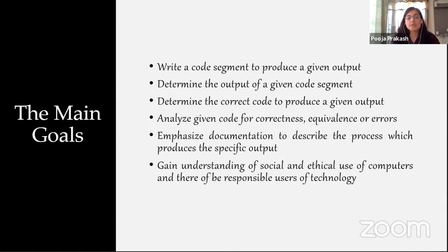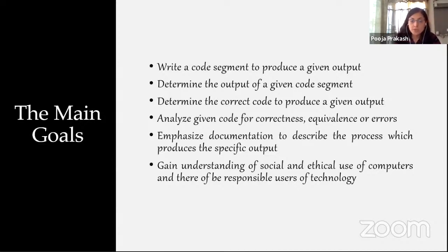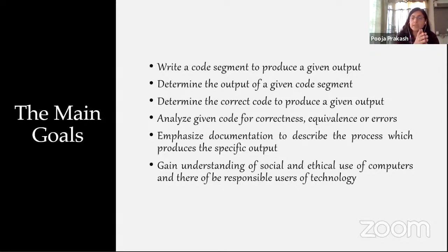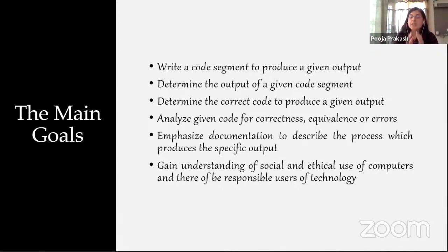Analyze the given code for correctness, equivalence, or error. Once you've written or been given a code segment, you need to understand: is it correct? If two code segments are given, are both going to give you the same result, or is there some difference? Is there any error or mistake in the code that would prevent you from receiving the desired output?